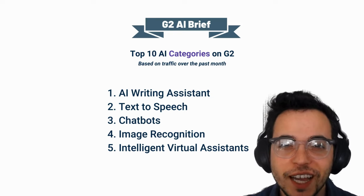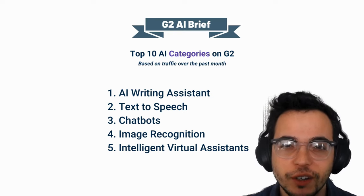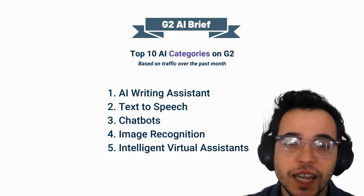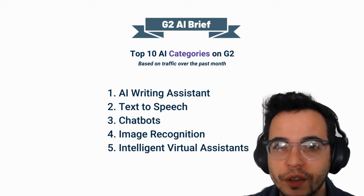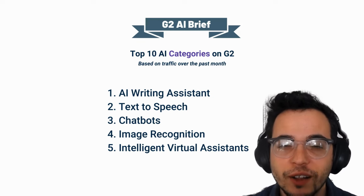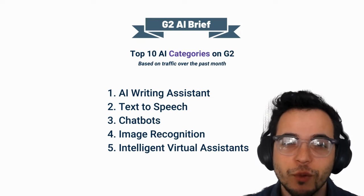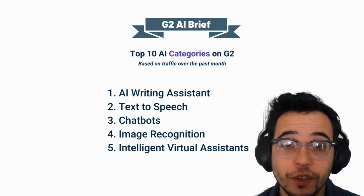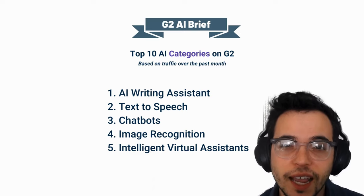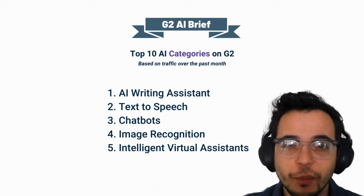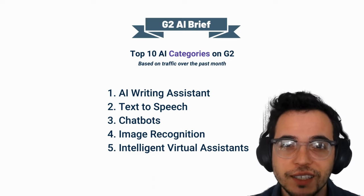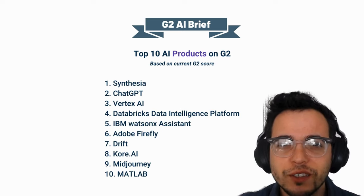In many of these categories, content is very critical — the ability to take one piece of content, turn it into another, and scale content. That's something which is very important for these solutions and AI as a whole, and we're seeing just how important this is over this past month for these top trending categories.